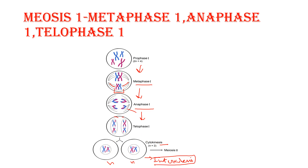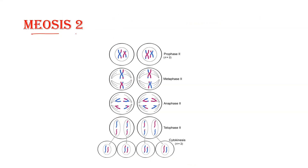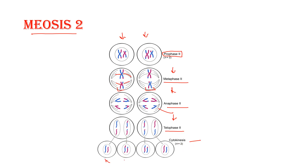The cell enters interkinesis, a short-lived phase, and quickly enters meiosis two. In prophase two, condensation of chromosomes is done. In metaphase two, chromosomes align at the metaphase plate and spindle fibers attach. In anaphase two, spindle fibers shorten and sister chromatids are pulled apart. In telophase two, the nuclear envelope forms around the chromosomes, then cytokinesis divides each cell into two haploid cells.